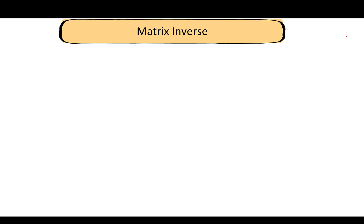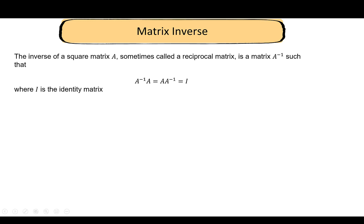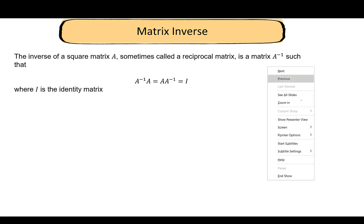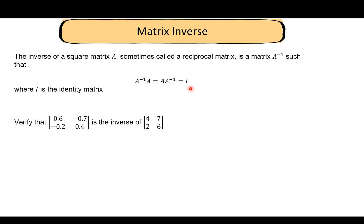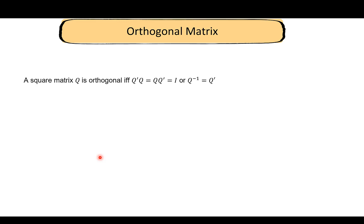Now let's look at the inverse of a matrix. The inverse of a square matrix A, denoted A^(−1), is a matrix such that A^(−1)·A = A·A^(−1) = I, the identity matrix. To verify that a given matrix is the inverse of A, you check that pre-multiplying and post-multiplying A by it both yield the identity matrix.